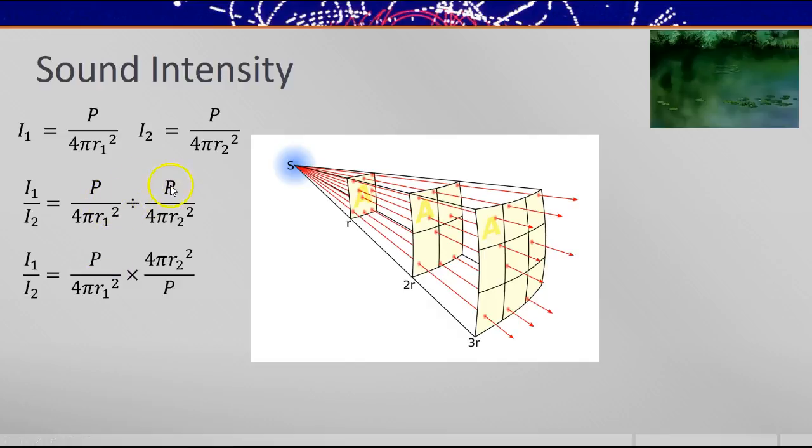So don't forget, if I divide by a fraction, that's the same as multiplying by the inverse of that fraction. You see that P cancels. It's the same source emitting the power, and 4π cancels. And so you end up with this ratio formula. The ratio of intensities is inversely proportional to the distances squared.